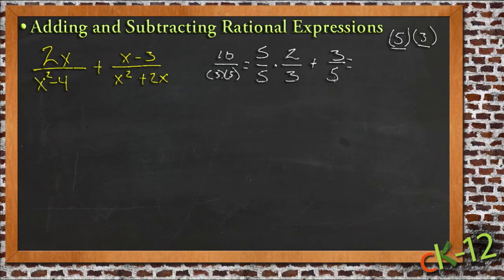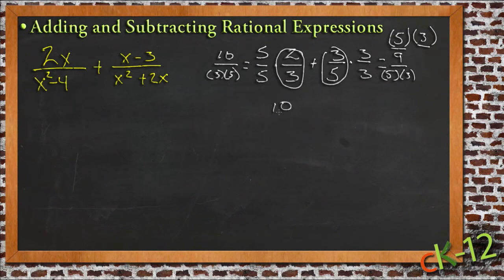On the other side, this already has the 5, so I need to multiply this one top and bottom by 3. That gives me 3 times 3, or 9 in the numerator, and now I have that same 5 times 3 in the denominator. So now, instead of adding 2 thirds plus 3 fifths, I'm instead adding 10 fifteenths and 9 fifteenths, and those have the same denominator, and I can go ahead and add them, and I get 19 fifteenths.